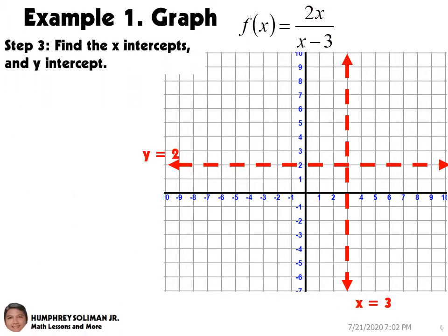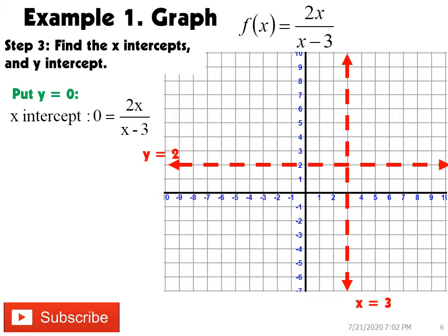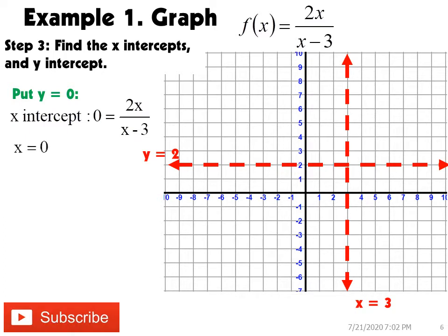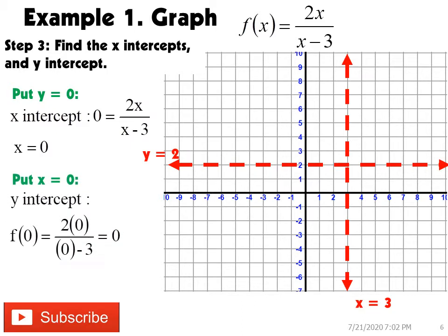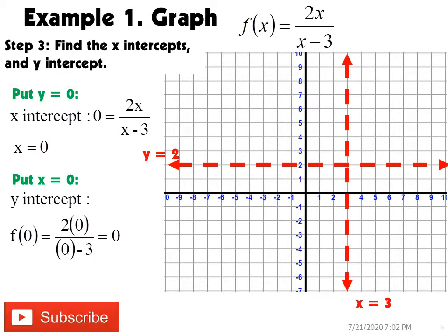For step number three, we need to find the x-intercepts and the y-intercepts. To solve for the x-intercept, we need to substitute zero for the value of y and then solve for x. This will give us x equals zero, so our x-intercept is zero. To solve for the y-intercept, we substitute zero for the value of x in the function. This gives us y equals zero. Since our x-intercept and y-intercept are both zero, we will have a point at the origin.